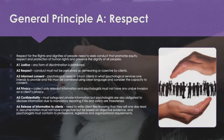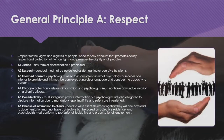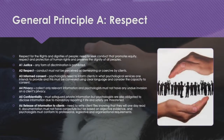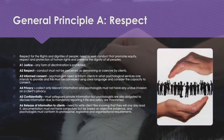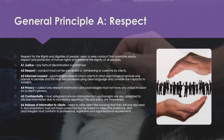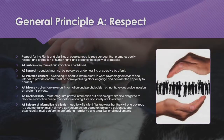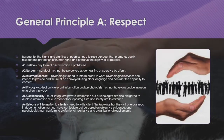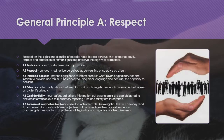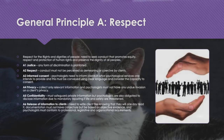A4 is Privacy — this involves the collection of relevant information only, and psychologists must not have any undue invasion of a client's privacy. A5 is Confidentiality, whereby a psychologist must safeguard private information, but psychologists are also obligated to disclose information due to mandatory reporting if life and safety are threatened. A6 is the Release of Information to Clients, whereby psychologists need to write client files knowing they will one day be read by the clients themselves. Documentation must not contain conjecture but be based on objective evidence, and psychologists must conform to professional, legislative, and organisational requirements.